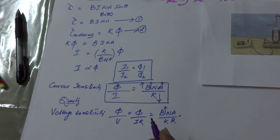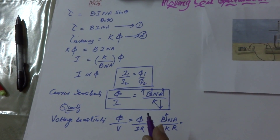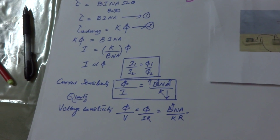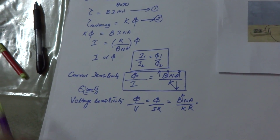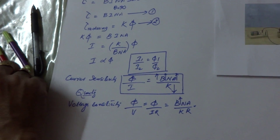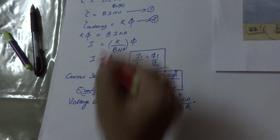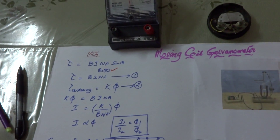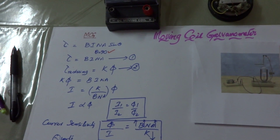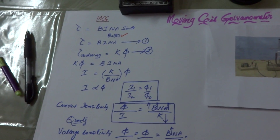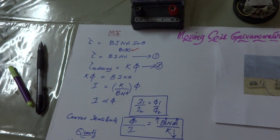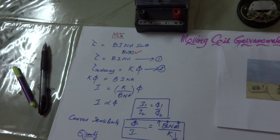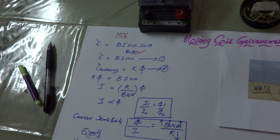There are several questions that can come on moving coil galvanometer. The very first question: why is radial field necessary? The radial field is necessary to make theta equal to 90 degrees. That is the first point. How do we produce radial magnetic field? Radial magnetic field can be produced with the help of concave poles. That is the answer.